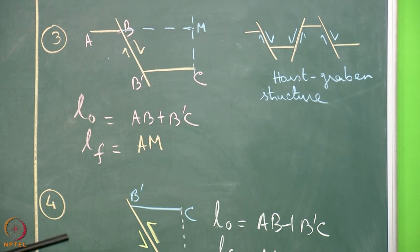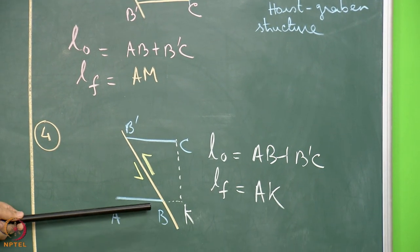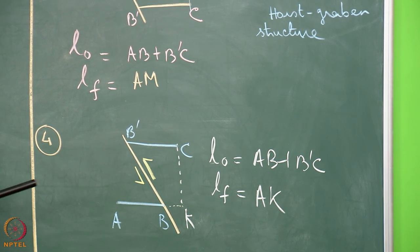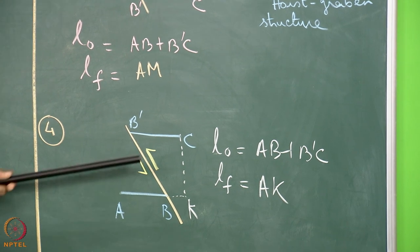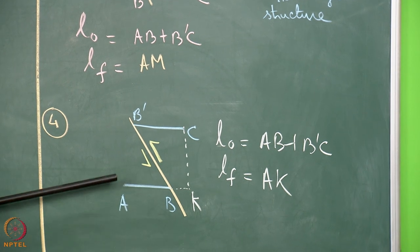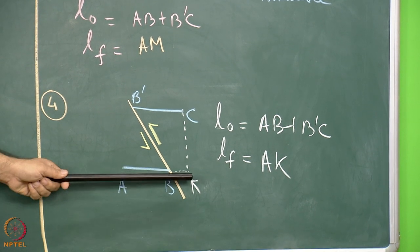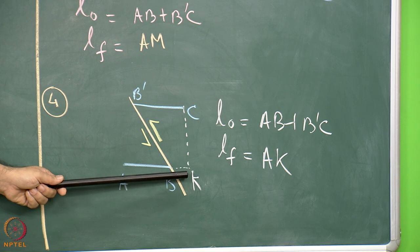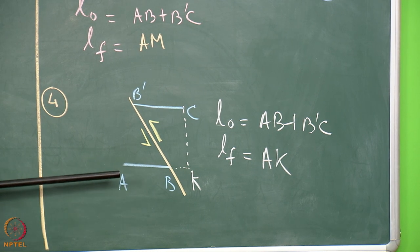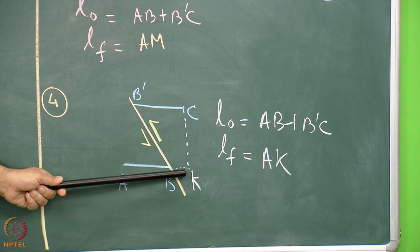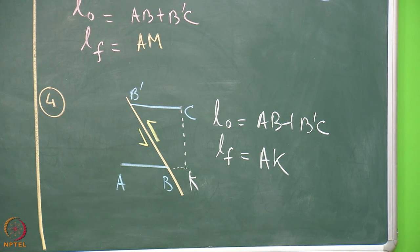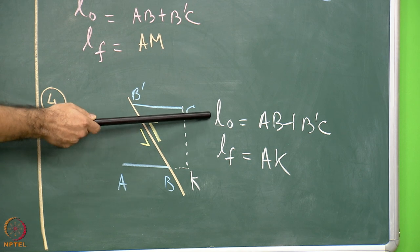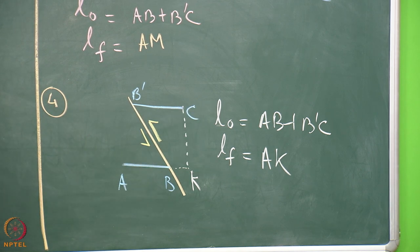For a reverse fault, the AB marker line is displaced to B dash C on the other side of the faulted block. From C, drop a perpendicular onto the extension of line AB; the intersection point is K. The L final is the AK distance, and L initial is AB plus B dash C. With both lengths known, all strain parameters can be calculated.